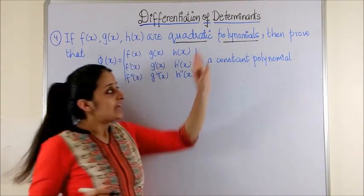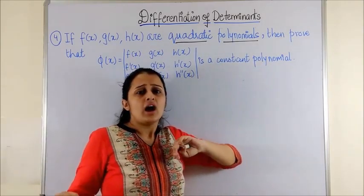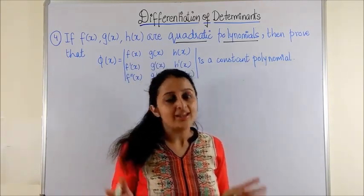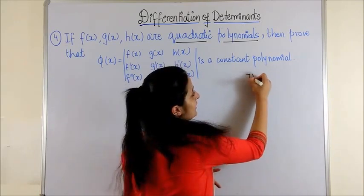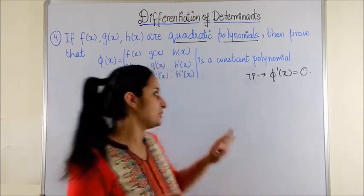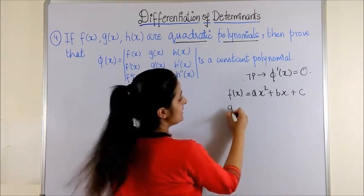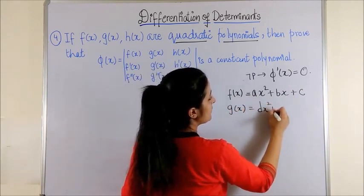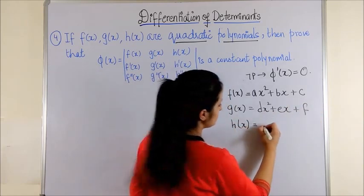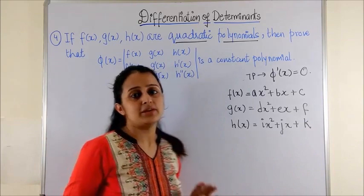Then we need to prove that φ(x) is a constant polynomial. Now how is it related to derivatives? Please note: if I want to show φ(x) is a constant, then it is sufficient to show that φ'(x) would give us a zero, because as you know, derivative of a constant is always zero. So let f(x) be a polynomial, say ax² + bx + c. Similarly, g(x) be dx² + ex + f, and let h(x) be say ix² + jx + k.